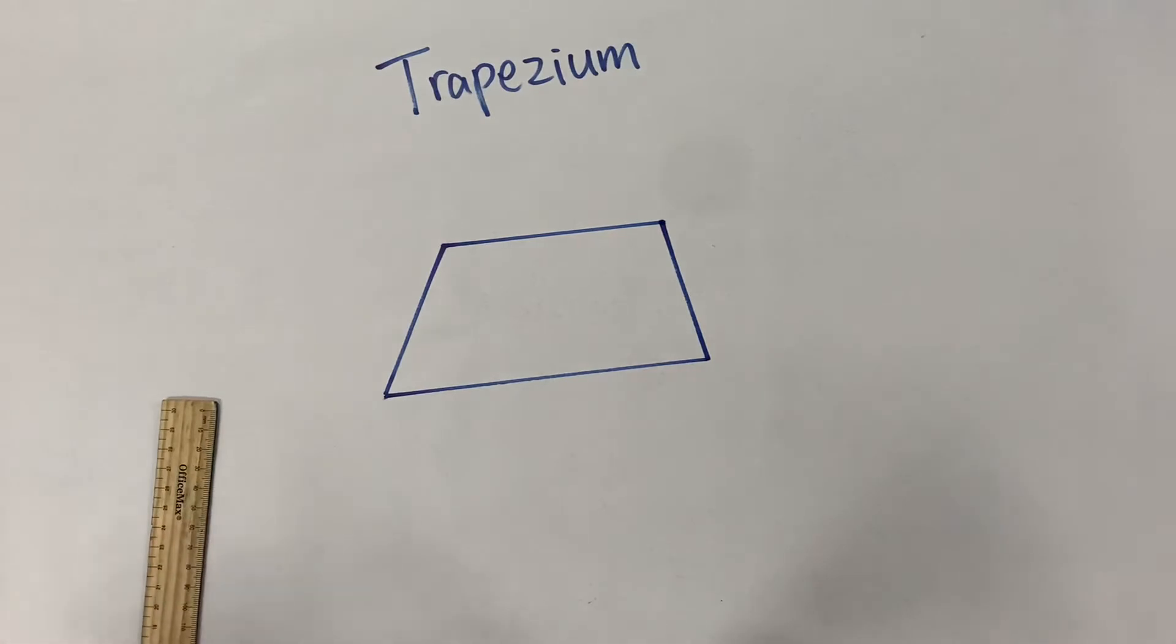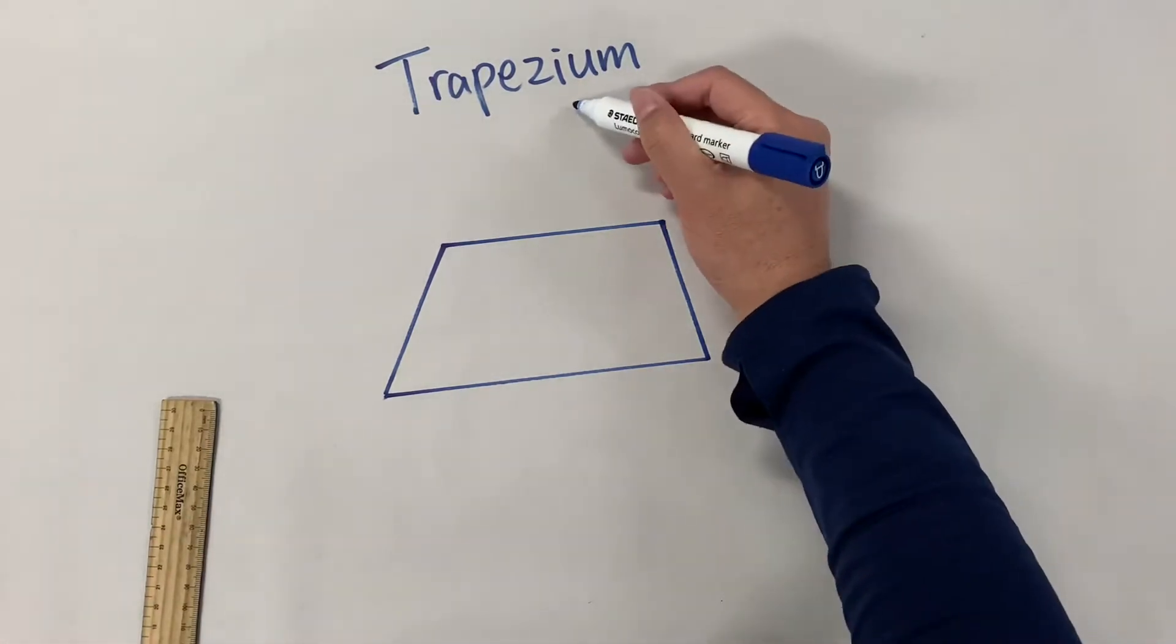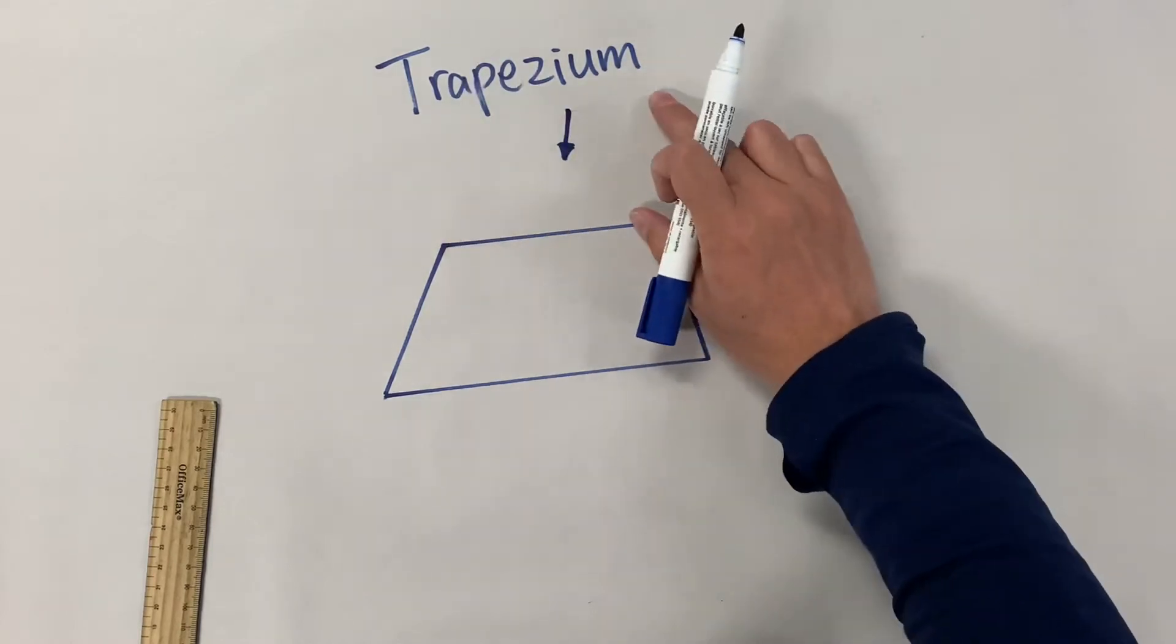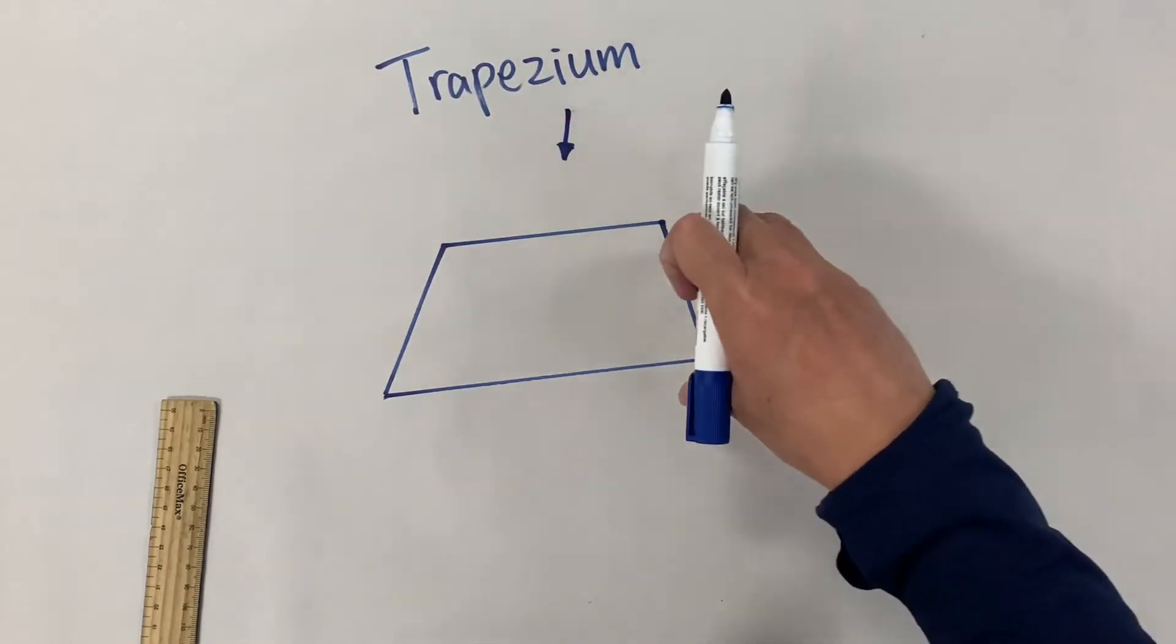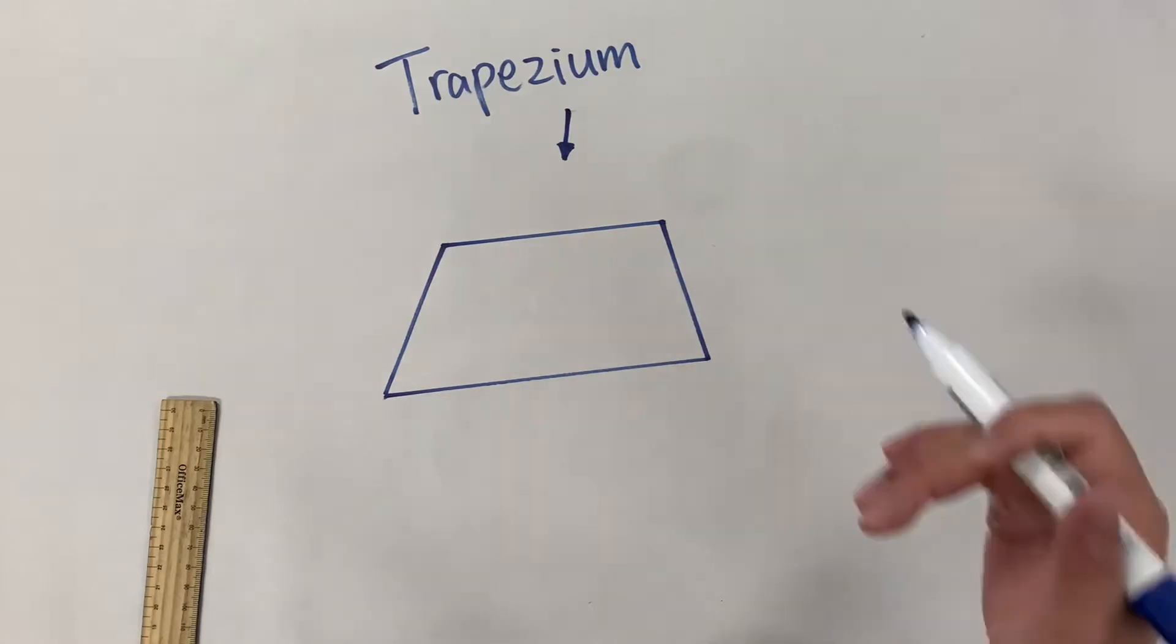So what is it? Now remember it is important to define what a trapezium is, so we can see if a particular shape is a trapezium or not.